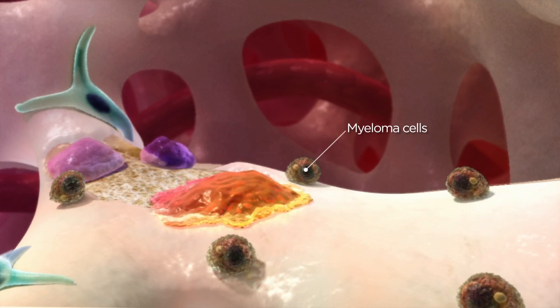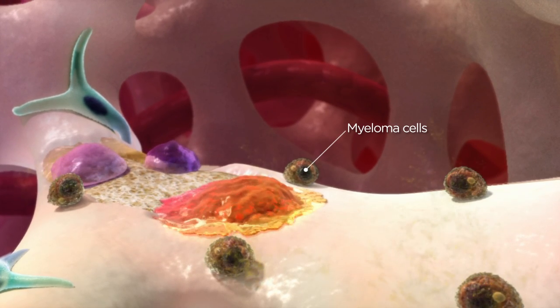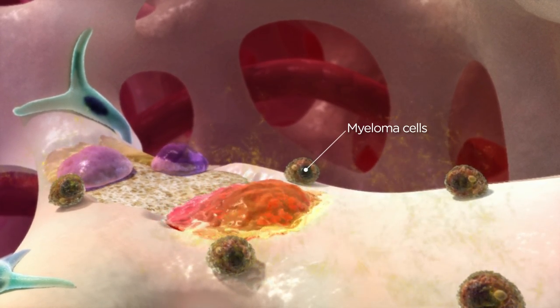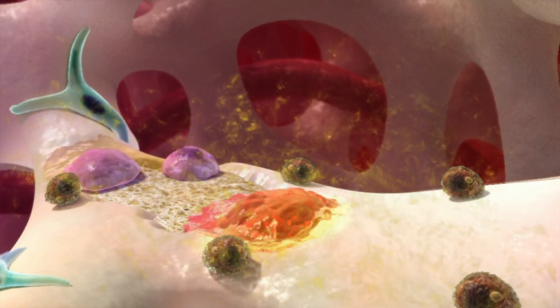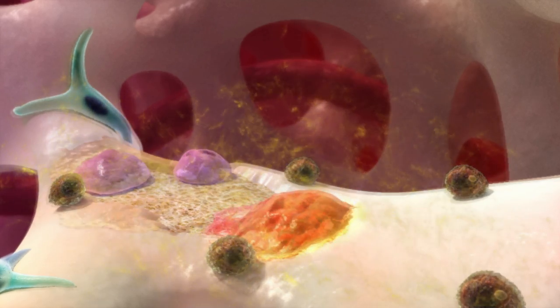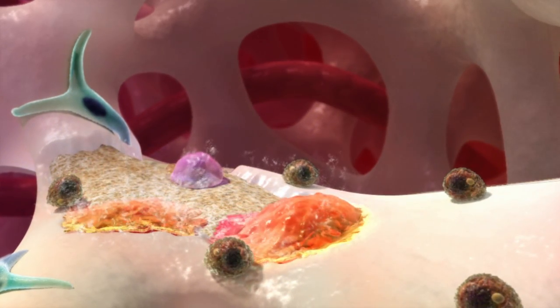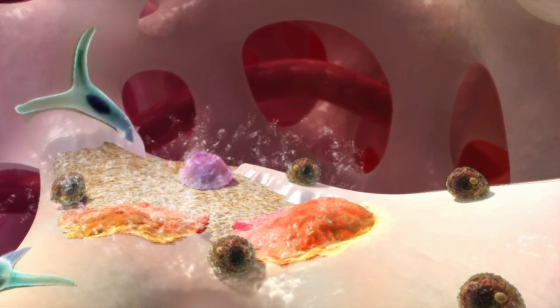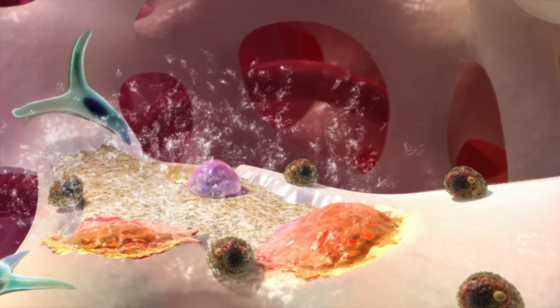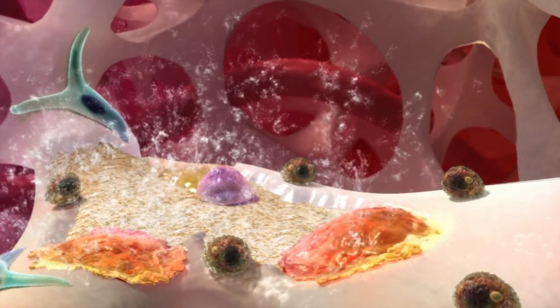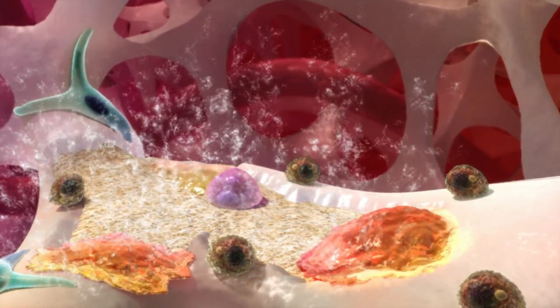In myeloma, the myeloma cells produce their own chemical signals disrupting the balance of signals between the osteoclasts, osteoblasts, and stromal cells. This results in an increase in the activity of the osteoclasts and a decrease in the activity of the osteoblasts so that bone is broken down faster than it's being made. The bone therefore becomes thinner and much weaker.